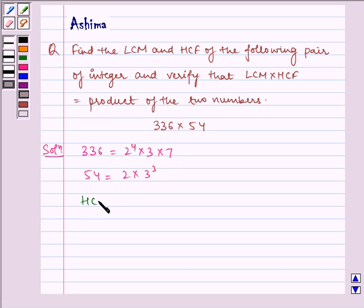Therefore, our HCF will be 2 into 3 which is equal to 6, and LCM will be equal to 2 to the power 4 into 3 cube into 7 which is equal to 3024.